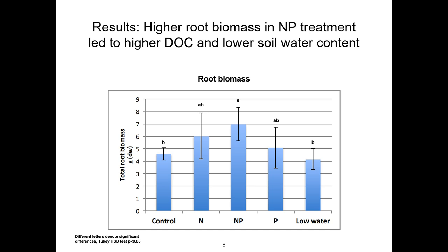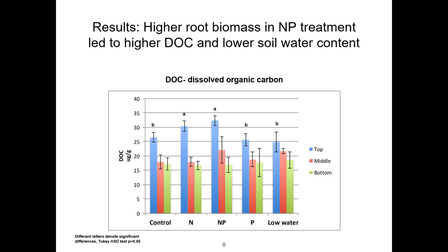For some background results on how the fertilizer treatments affect the soil: on the X axis you can see the control, nitrogen fertilization (plus N), plus P, phosphorus, and low-watering treatments. The plus N plus P treatment, probably not surprisingly, had the largest root biomass across all three horizons. Next, we analyzed dissolved organic carbon and found the same trend, specifically at the top horizon — higher DOC in the plus N plus P treatment. Since most of the significant differences in soil parameters were found in the top horizon, from now on I will mainly focus on this horizon.